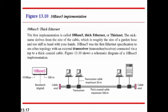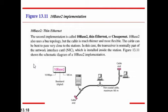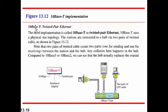The second standard is 10Base2, known as Thin Ethernet or CheaperNet. The communication line is slightly curved. It uses a network interface card and different transceivers connected to systems along the cable. The third standard is 10BaseT, where T stands for twisted pair. It uses a hub and two pairs of UTP (Unshielded Twisted Pair) cables.